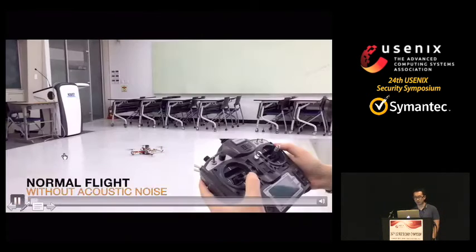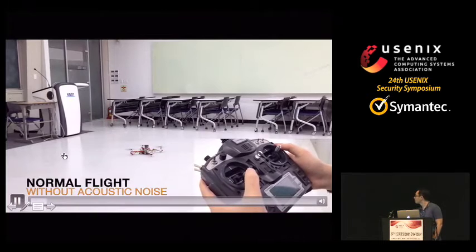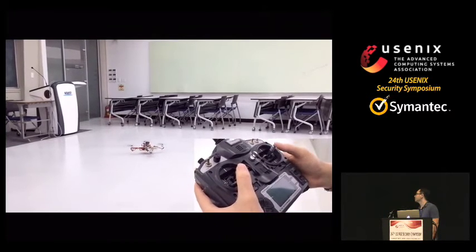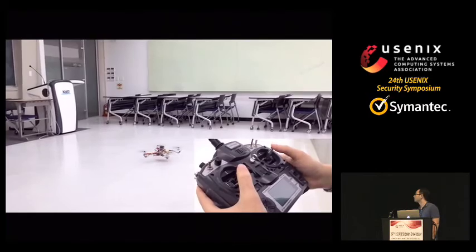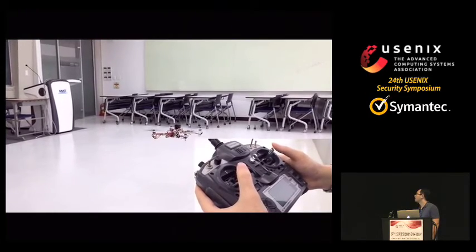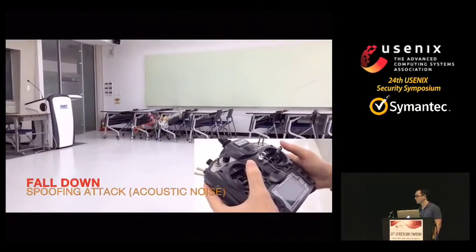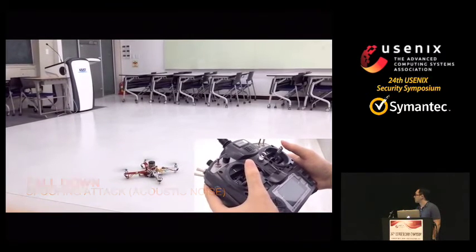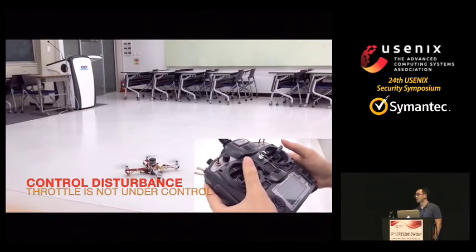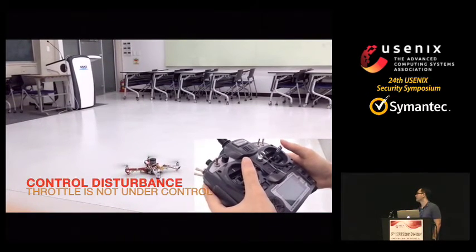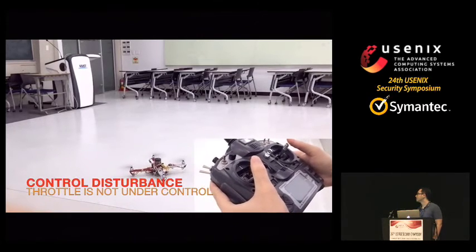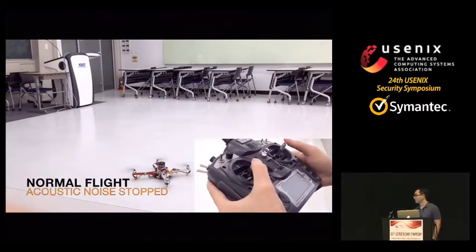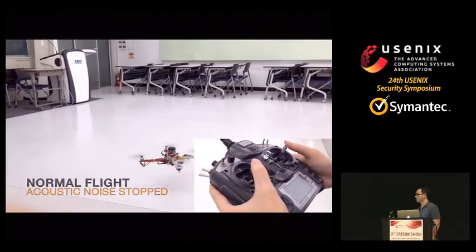Here is our demo. This is normal flight for 10 seconds. Right after our attack started, the target drone falls down and cannot arise during our attack. After the attack, it is controllable again.